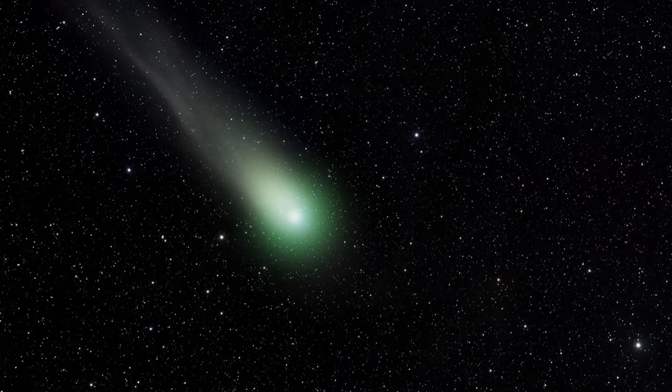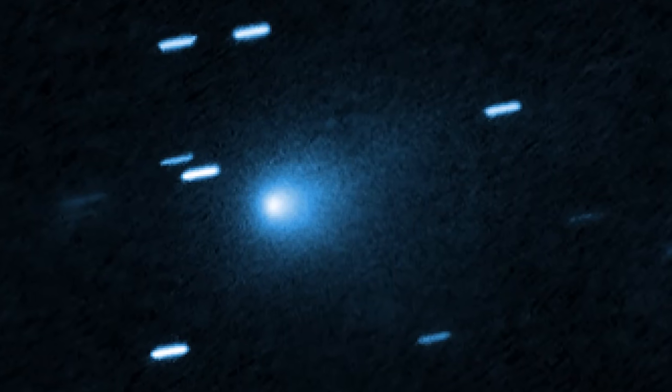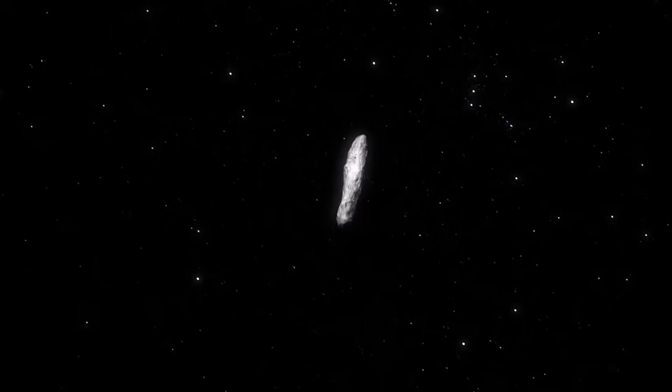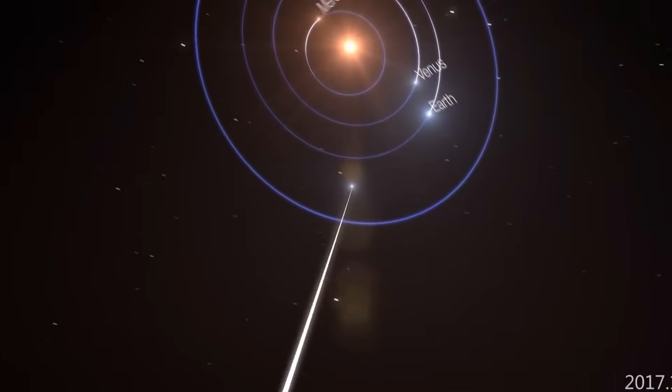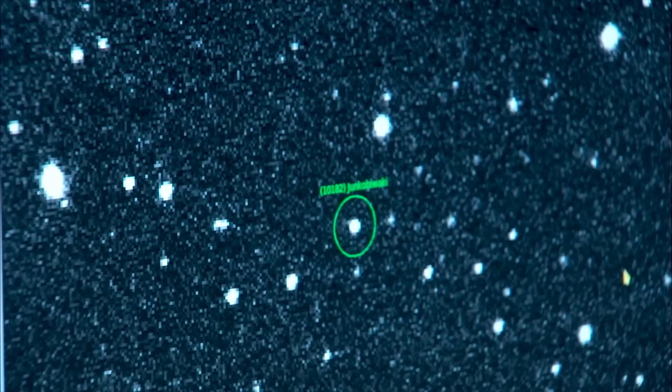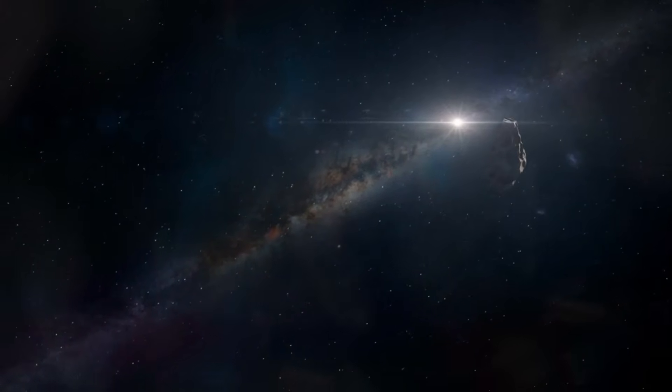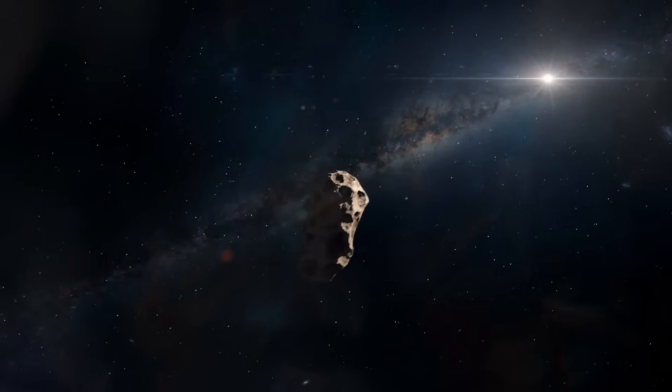So let's talk about that trajectory. Right now, 3iAtlas is moving at 152,000 miles per hour. That's fast enough to cross the entire United States in just over a minute. It's currently about 3 AU from the sun. But closing the distance rapidly. Its itinerary for the coming months is precise. On October 3rd, it will make a close encounter with Mars. Just 26 days later, on October 29th, it hits perihelion. It's tightest turn around the sun.